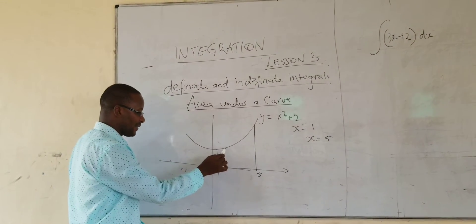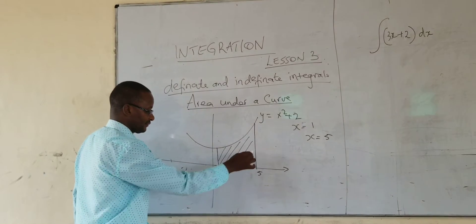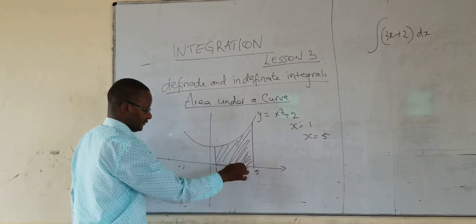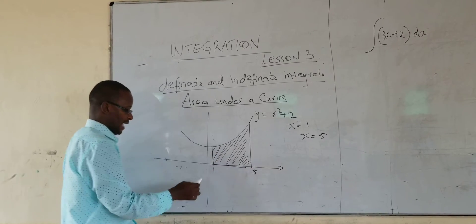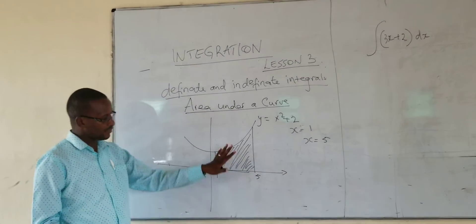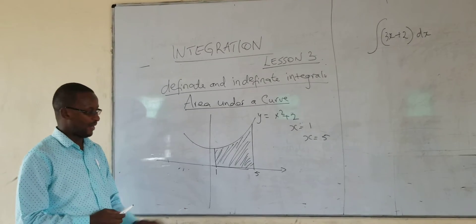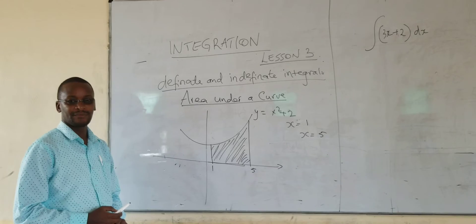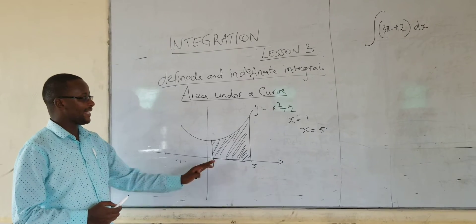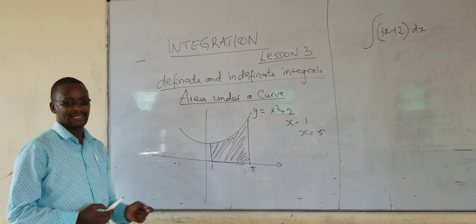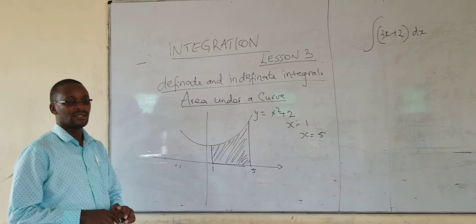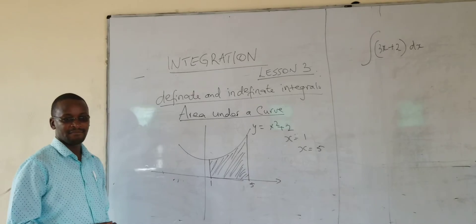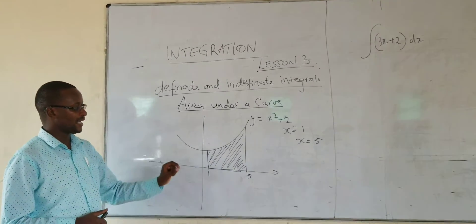So, this is the area we are talking about — the area under the curve and between the line X equals 1 and X equals 5. For us to get this, we can apply integration, and integration will give us the exact area. Remember, the other rules will give you approximated area, but integration will give you the exact area.